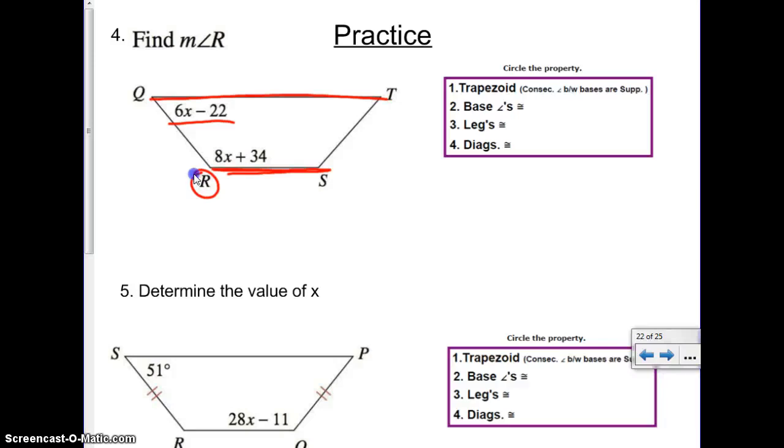You can see angle R is a base for that line RS, and angle Q is a base for our side QT, but they're not base angles for the same base, so you can't use number two. I know, that's what I was thinking, right? But if you think about rule number one, it says hey, consecutive angles between bases are supplementary. Consecutive means next to. So by number one, I know that if I do 6X, or excuse me, before we even write that, let's write the whole thing out. Let's write angle Q plus angle R is going to equal 180 degrees. If you just look at it, you can see.